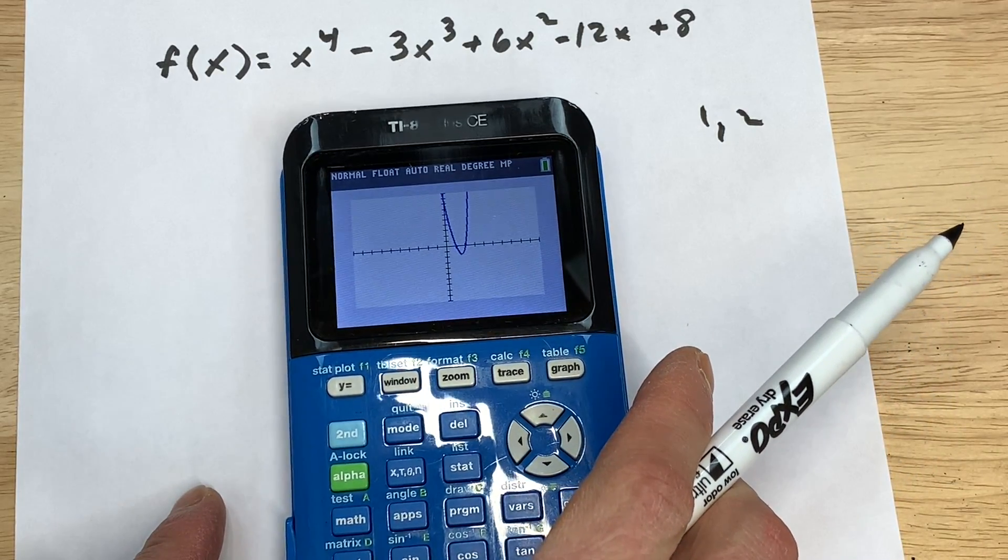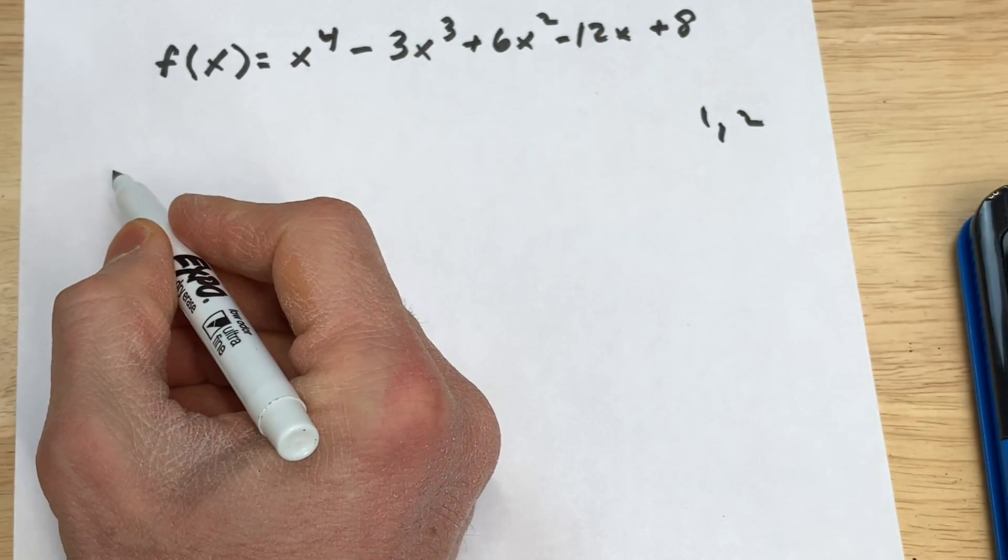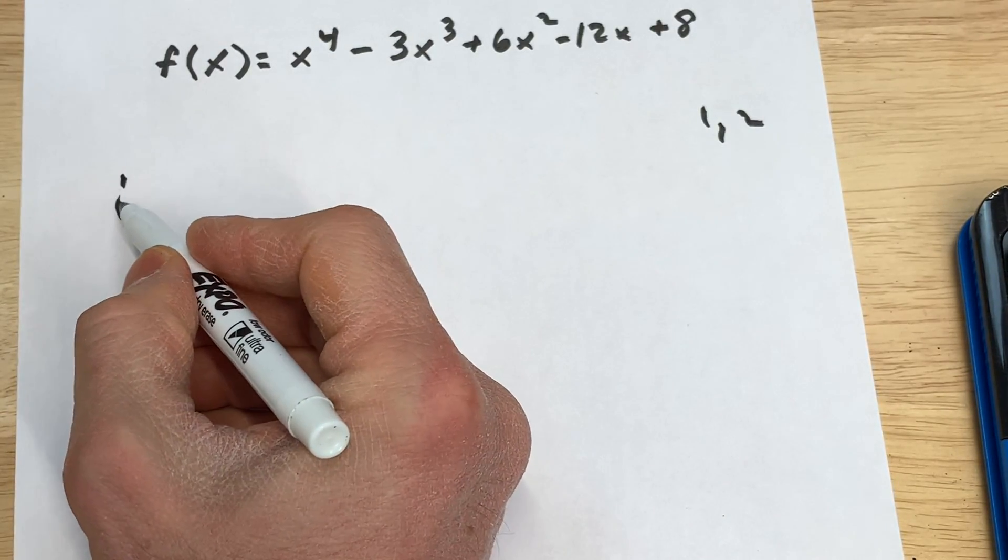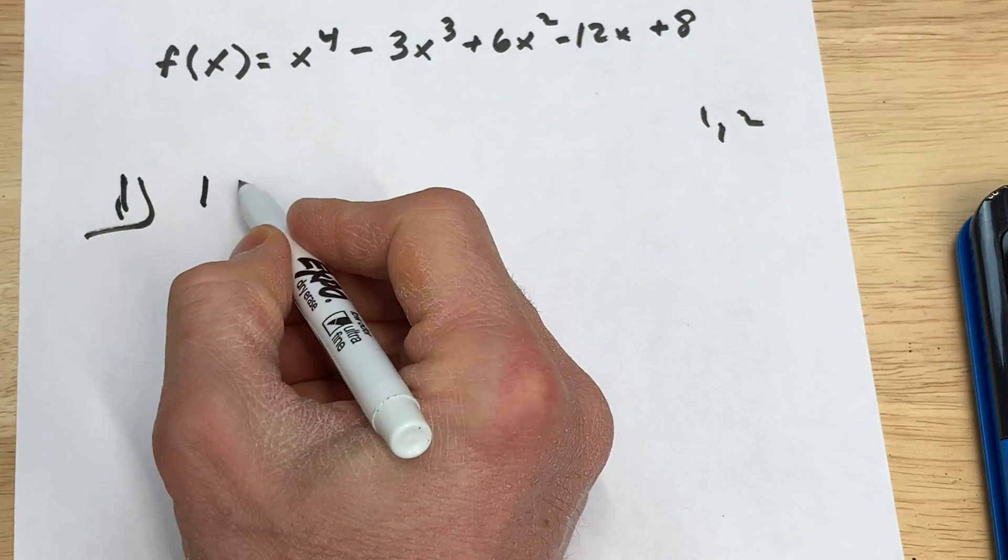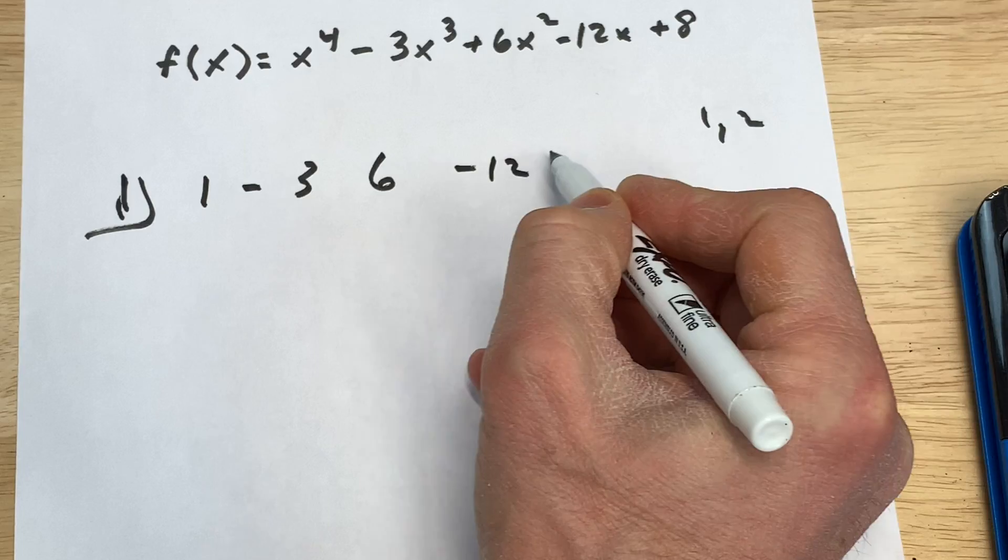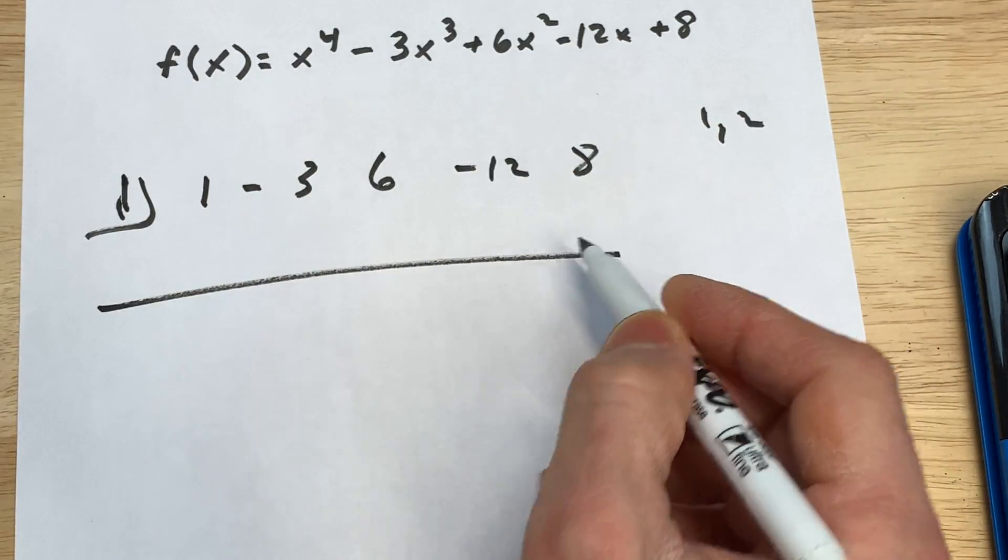To find all of the zeros, we know that 1 and 2 are zeros. Let's go ahead and do some synthetic division. So if 1 is a zero, let's put the coefficients of our polynomial here: 1, negative 3, 6, negative 12, 8. You can see there's no missing terms, so we don't need to put a 0 for a placeholder.